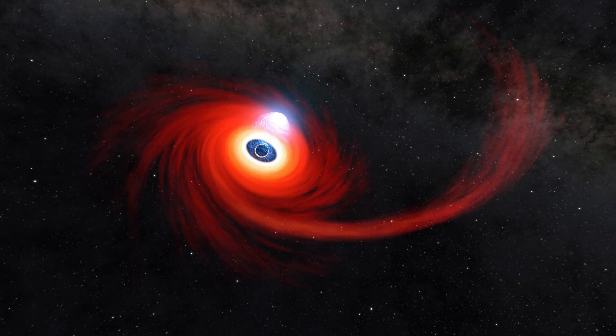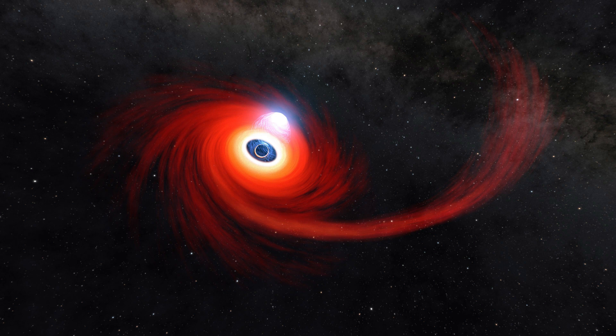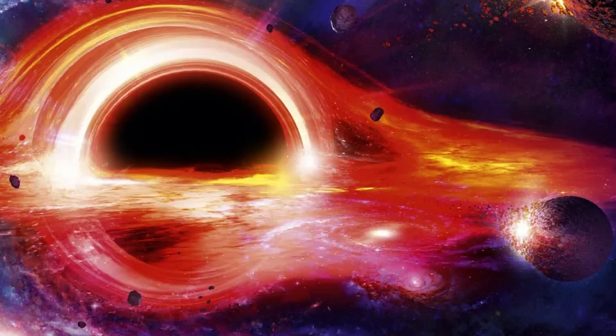There are three primary types of black holes. Stellar mass black holes typically have a mass between 3 to 10 times that of our sun. They are formed from the remnants of massive stars.